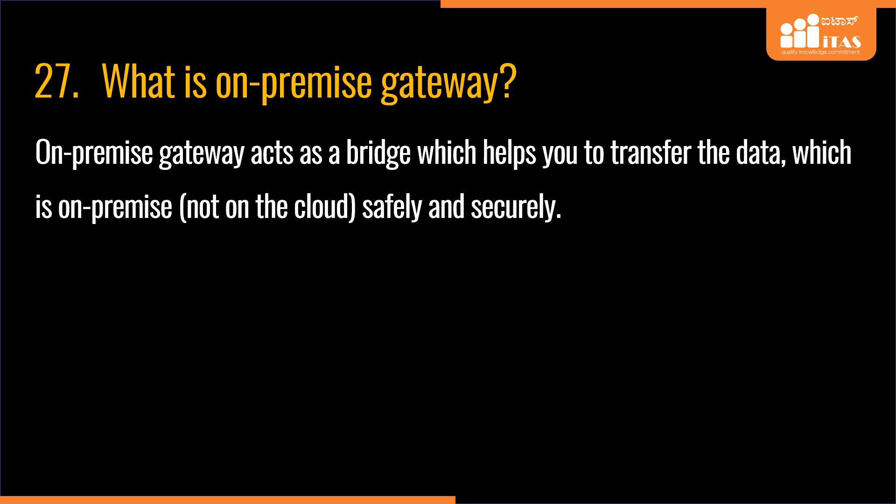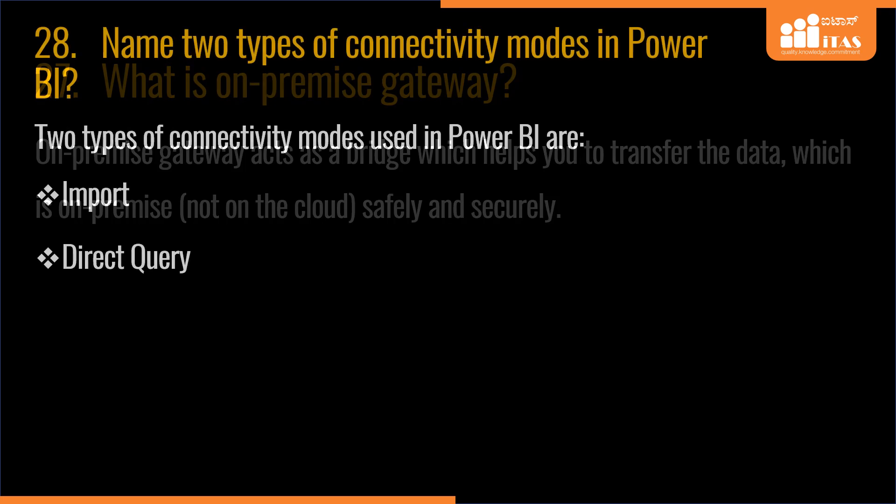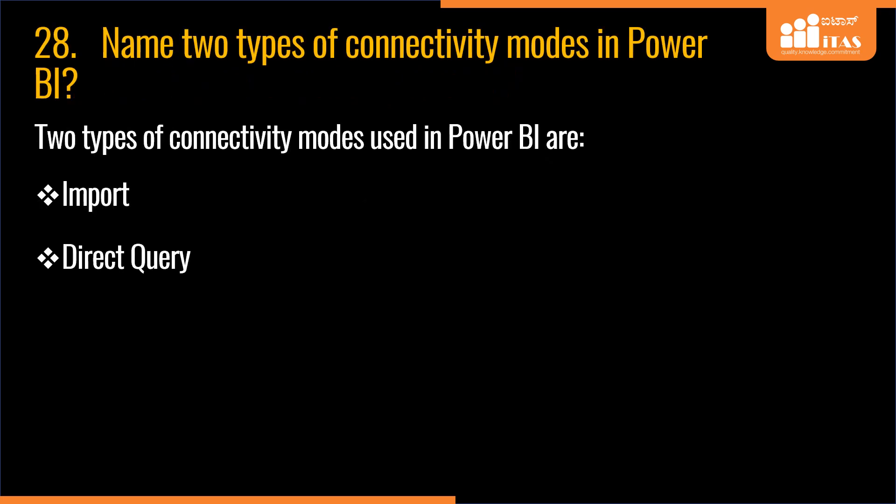Name two types of connectivity modes in Power BI. Two types of connectivity modes used in Power BI are Import and Direct Query.